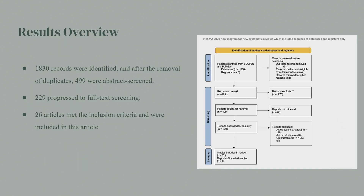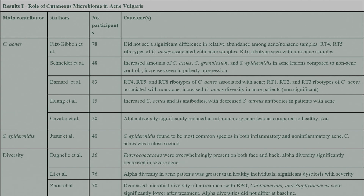For our results, we ended up including 26 articles. We broke it down into three sections. The first was the role of the microbiome in acne. To no one's surprise, C. acnes was predominant, which was well understood in the literature. But what was interesting were certain ribotypes of C. acnes that are pro-acne and some that are a little bit protective against acne. Some different species and how they interact were also noted — primarily Staph aureus, Staph epidermidis — and some diversity findings.